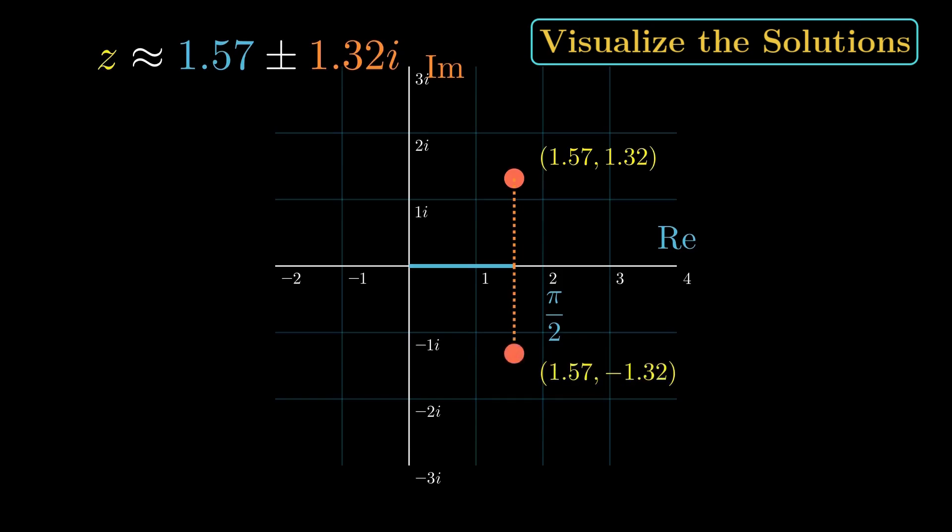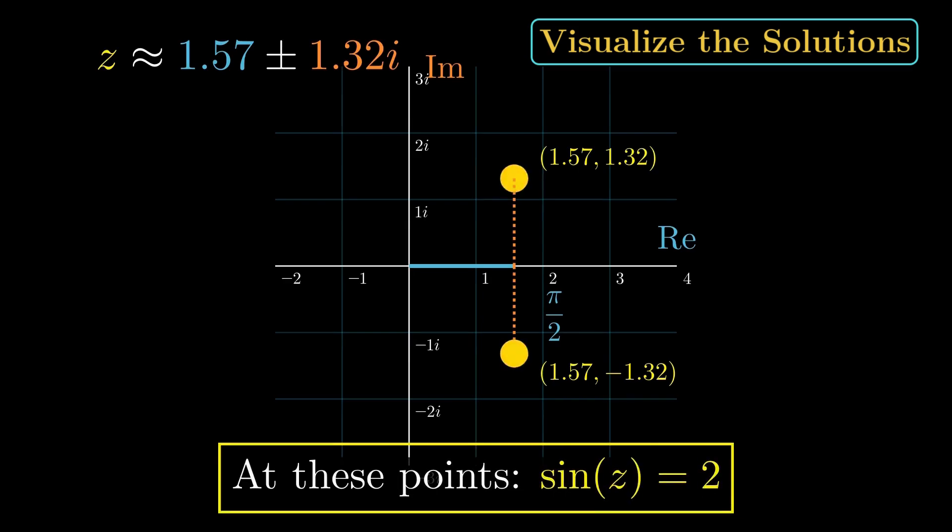And because of the plus or minus, there's a mirror solution. Go straight down by 1.32 to 1.57, negative 1.32. At both of these points, sine of z equals 2.